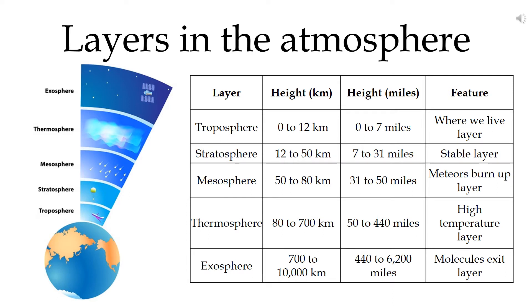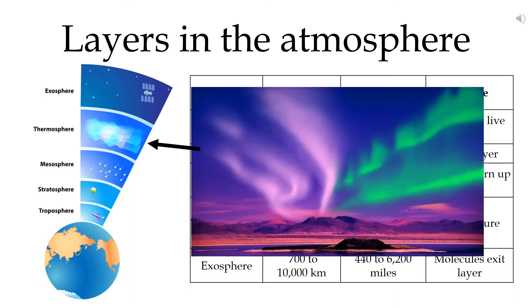The next layer is the thermosphere, between about 80km to 700km. The lowest part of the thermosphere is also sometimes referred to separately as the ionosphere, which is between about 80km and 550km above the Earth's surface.